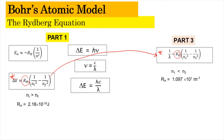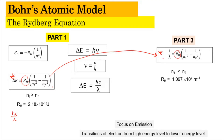Basically, they are the same — they come from the same basic formula but have different RH values. To understand more, let's look at how we can interconvert one formula into the other. Delta E can be converted into hc over lambda, because delta E equals hc over lambda. Both equations focus on the emission of photons, involving the transition of an electron from a high energy level to a lower energy level.